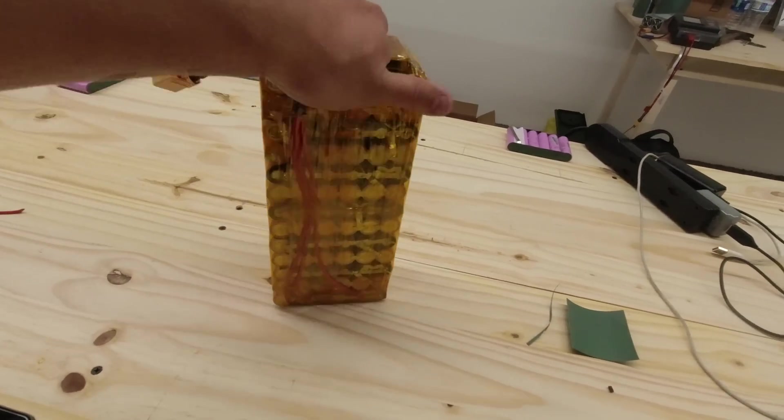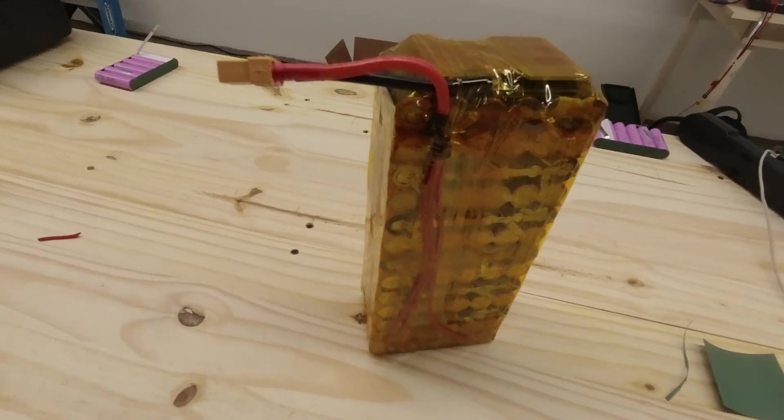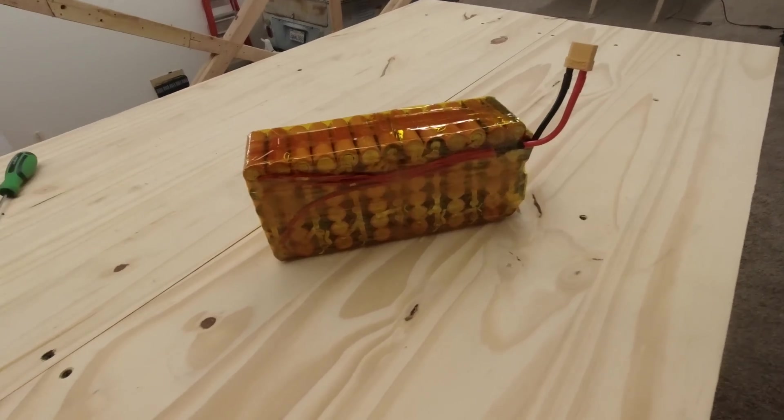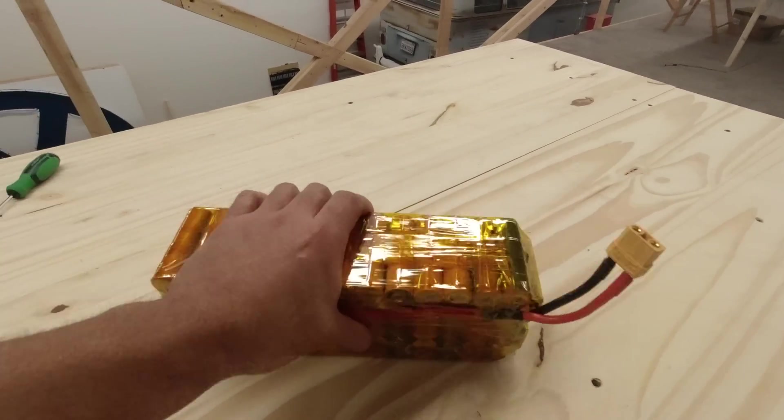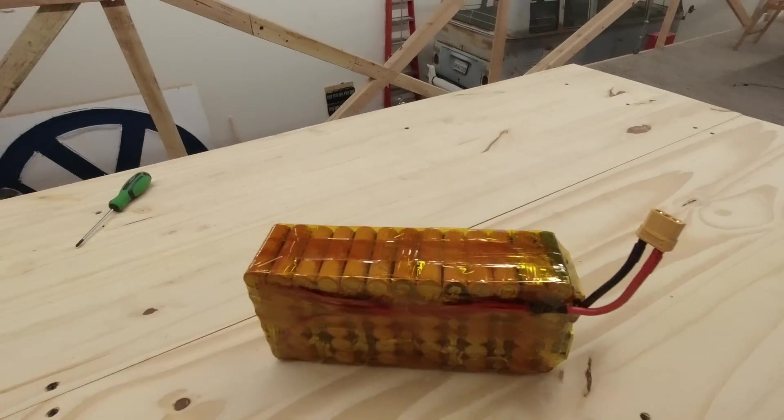So there we go, that is a 48 volt e-bike battery. Well, I mean you could use it for anything, but this is a perfect e-bike battery. This is a 15.6 amp hour 48 volt battery that's about 750 watt hours of battery, and you could make this for about 91 dollars. It takes about two to three hours to assemble, and some Kapton tape and a BMS, and you're ready to roll. All right, I hope you guys found this video useful, and we'll see you guys on the next one. All right, bye.